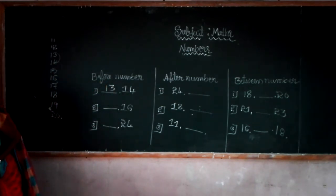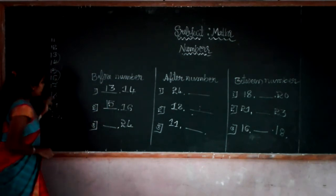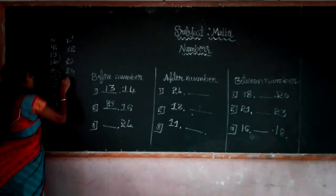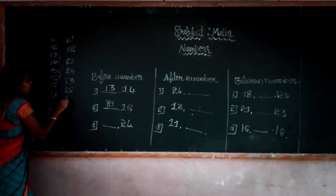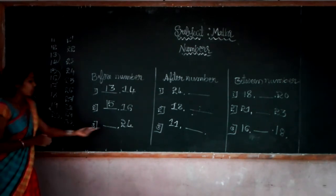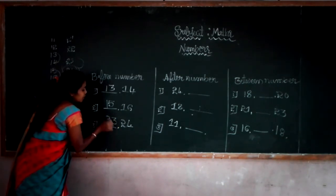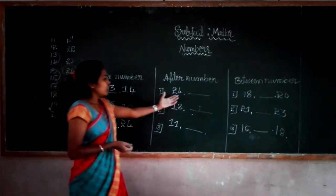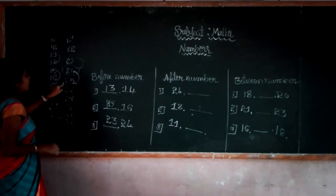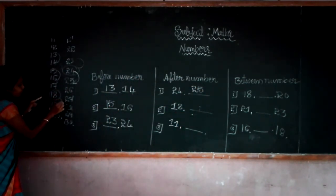The before number of 16 is 15. Now for 24 — on the number line: 21, 22, 23, 24, 25, 26, 27, 28, 29, 30. The before number of 24 is 23. For after number, the after number of 24 is 25. The after number of 18 is 19.